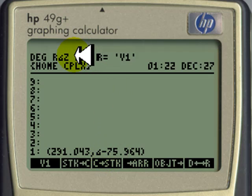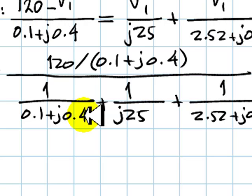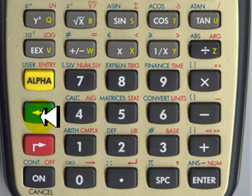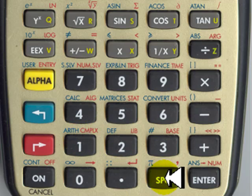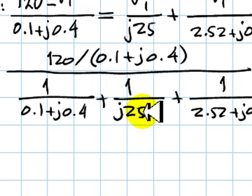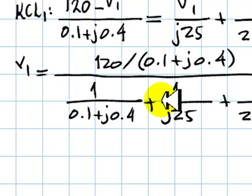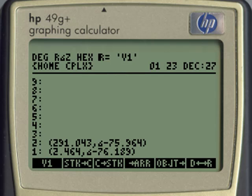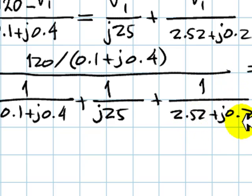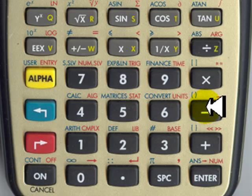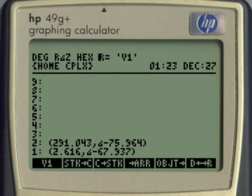Now, the denominator. 0.1, 0.4. Inverted. Round parenthesis. 0.1, 0.4. Inverse. Now, this term. 0.25 inverted. Round parenthesis. Zero space. Inverted. Add them together. Third term. 2.52, 0.2. Round parenthesis. 2.52, 0.2. Inverse. And add with the two other terms. This is the denominator.